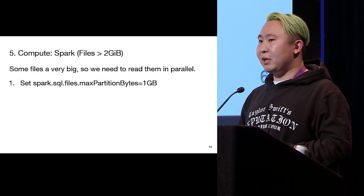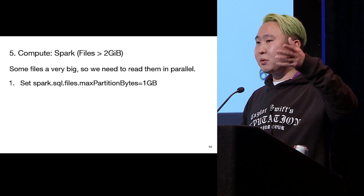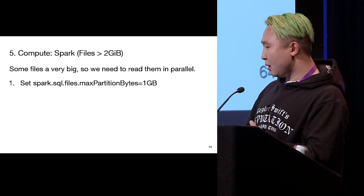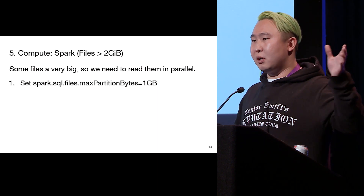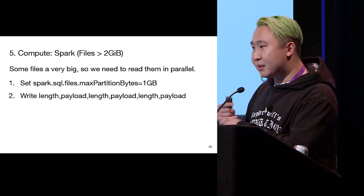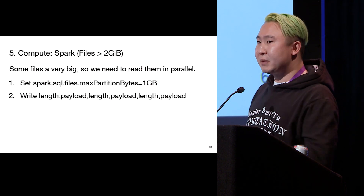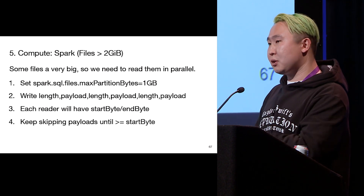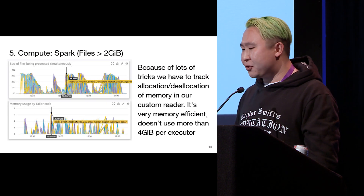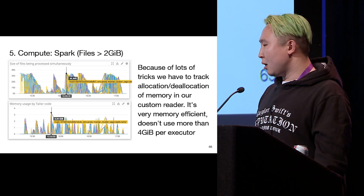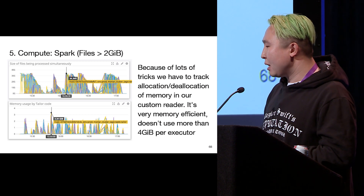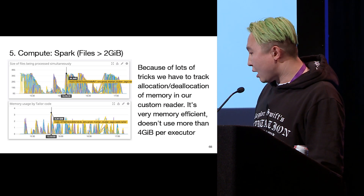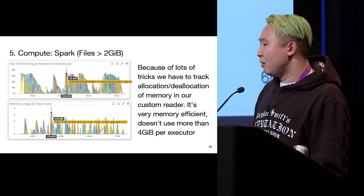Some files get really big, so when you have multiple tasks running, some of them will be completely skewed. So we wanted our file format to be splittable as well. We set a split size of one gigabyte, so multiple readers will read different parts of the file. Inside the file we write length, payload, length, payload — so when a reader starts, it has a start position and end position and keeps reading payloads until it reaches the start byte. Because of lots of tricks with allocation and deallocation of memory, we had to implement fine-grained monitoring around that. We track how much memory we allocate and deallocate, and our code is pretty efficient — we only use about four gigabytes at max for each executor.